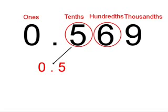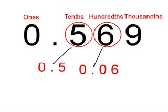The 6 is in the hundredths column. The 6 is actually 0.06. This number is also less than 1 because of the decimal point.